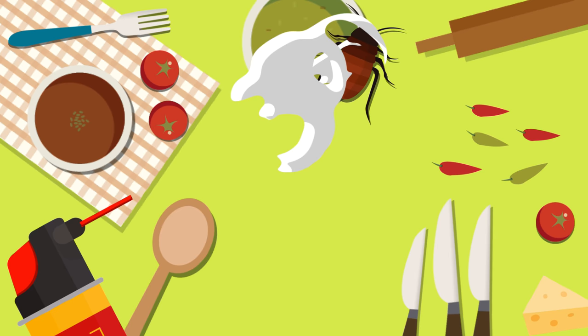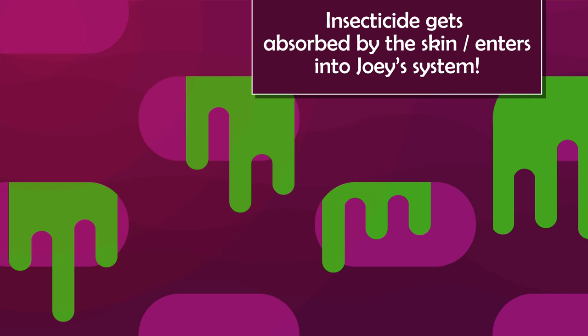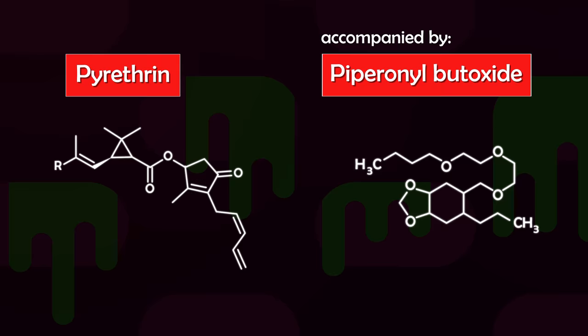Small pores and spiracles allow some of the harmful material to enter his system. For the insecticide, entering Joey's system is just the beginning. It has the potential to kill him in an instant thanks to lethal compounds like pyrethrins and pyrethroids.